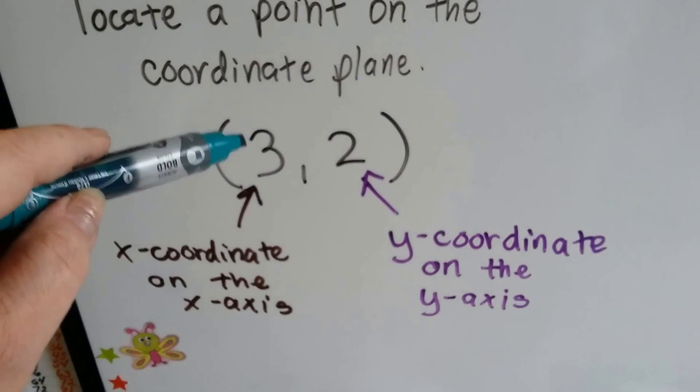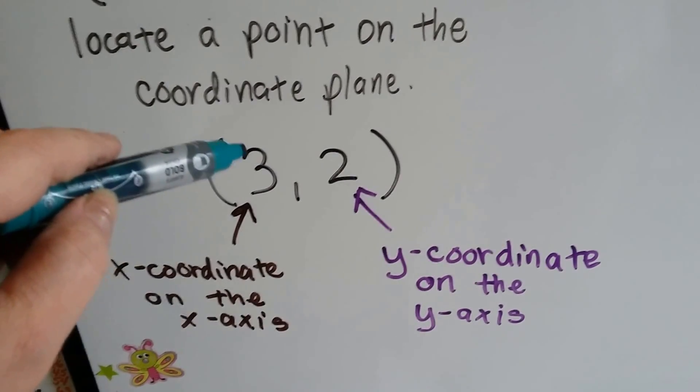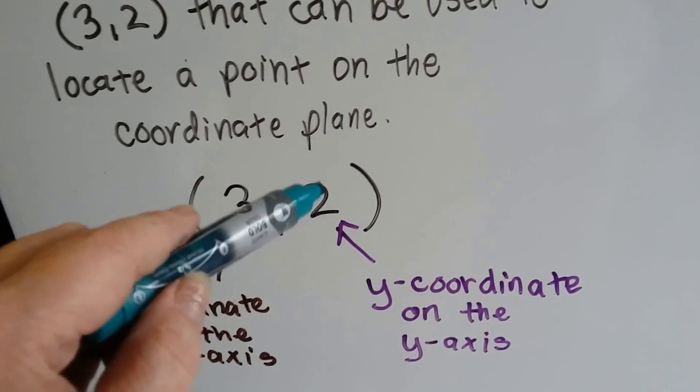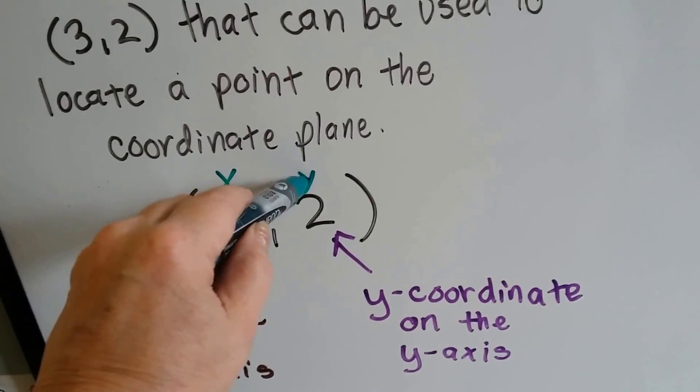This would be the x-coordinate on the x-axis. And this is the y-coordinate on the y-axis. So this is x, and this is y.